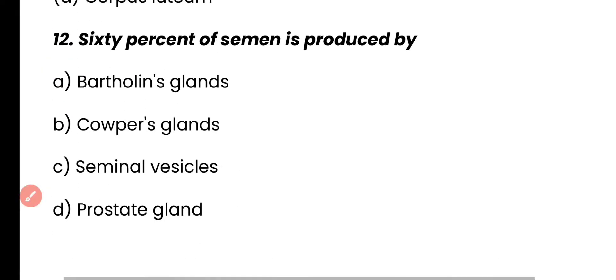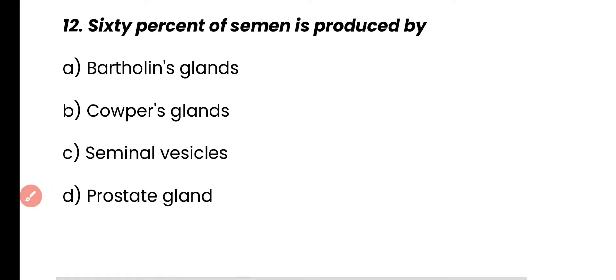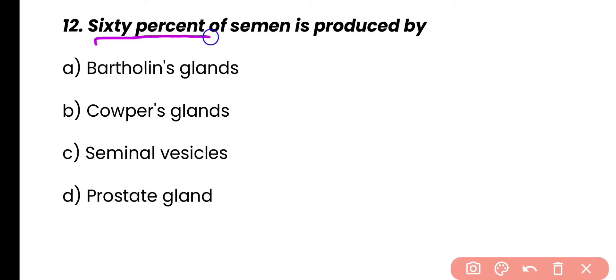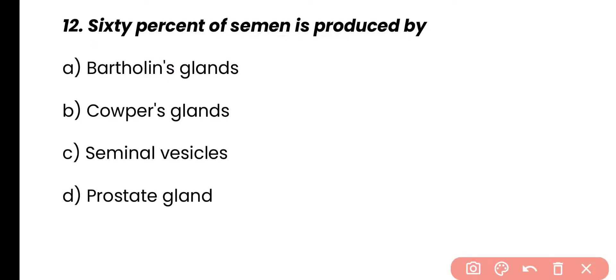Question 12: 60% of semen is produced by — Bartholin gland, Cowper's gland, seminal vesicles, or prostate gland? Correct answer is option C. Almost 60% of semen production is done by the seminal vesicle gland.